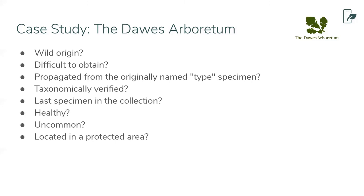We'll follow up with a blog article including a link to this recording and reference to the Dawes Arboretum method so people can get more detail on the numbers. It's difficult to score species and cultivars on the same basis — you have to look at different attributes of what makes a cultivar valuable versus a species, and arrive at a melded score. You can't just say all cultivars are less valuable than species.